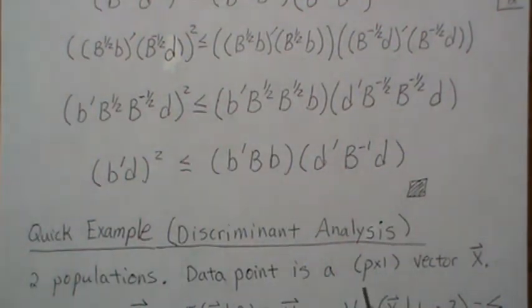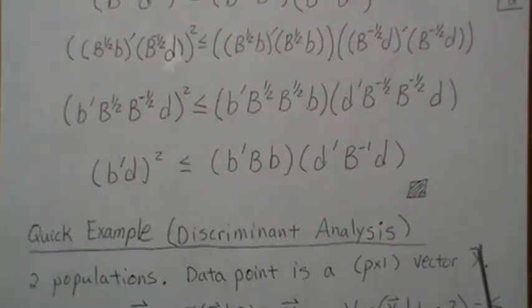And a data point is a P by one vector X. And so the components of this can be how severe is your cough, how severe is your fever, how severe is your muscle aches, how severe is your headache, and et cetera. So it can be signs and symptoms into this vector.